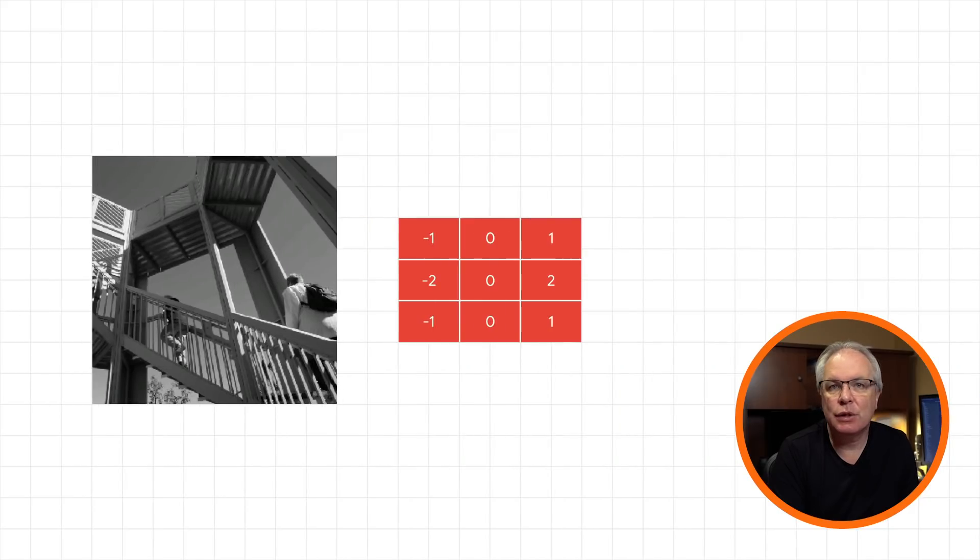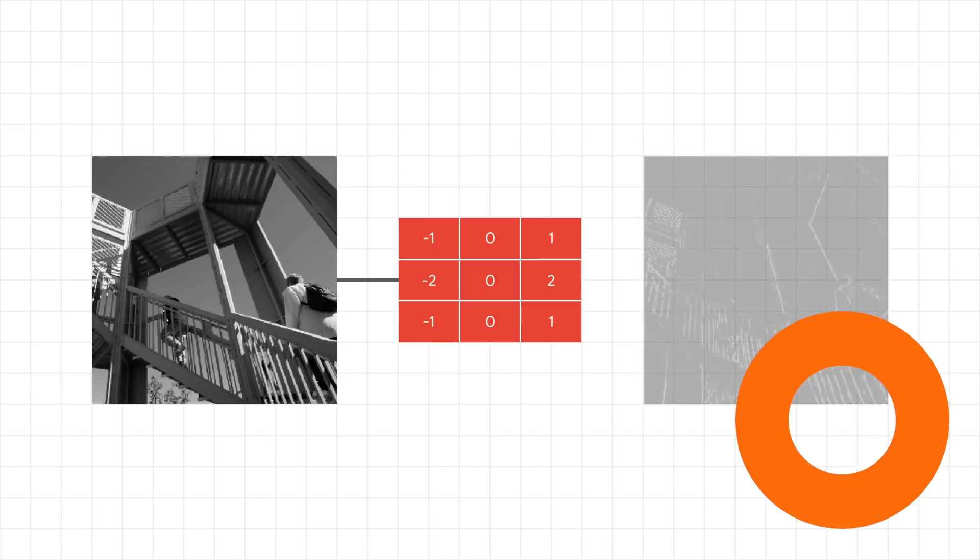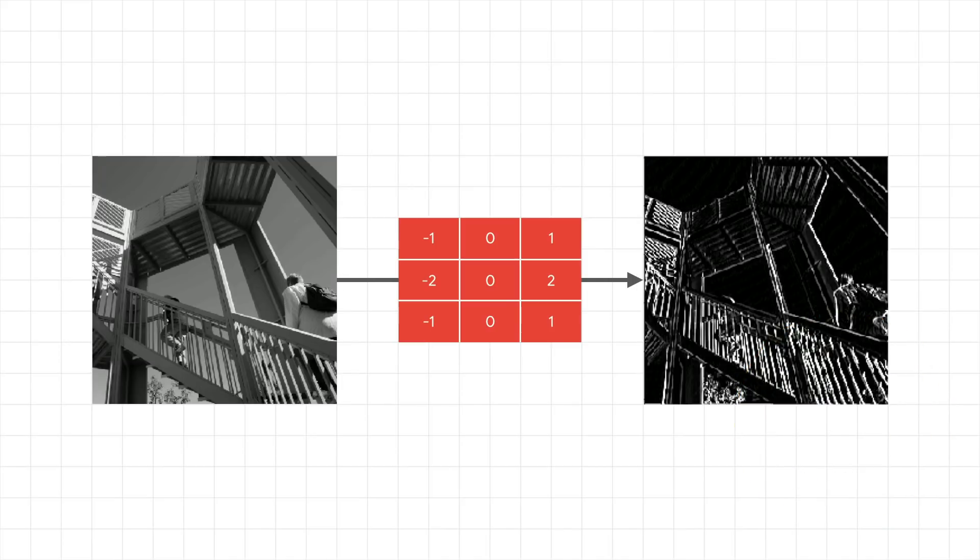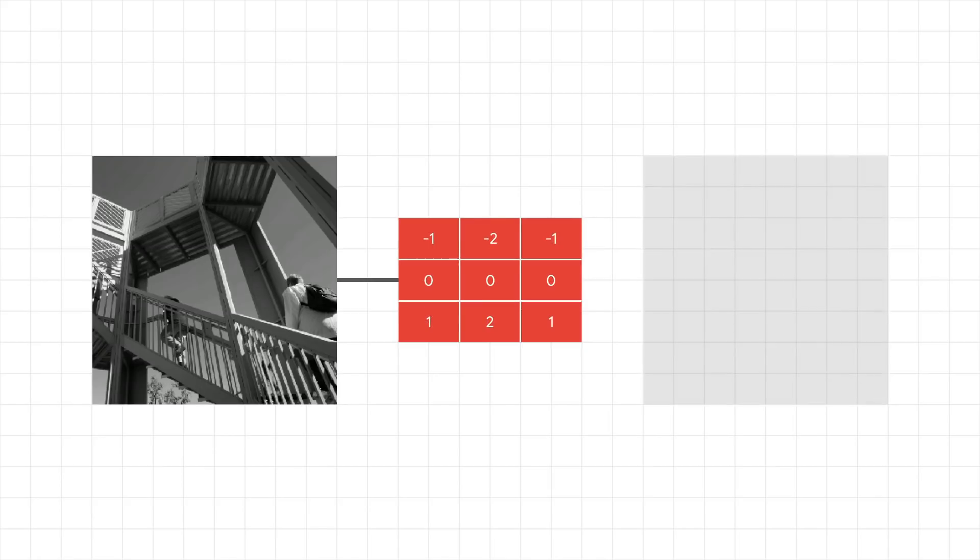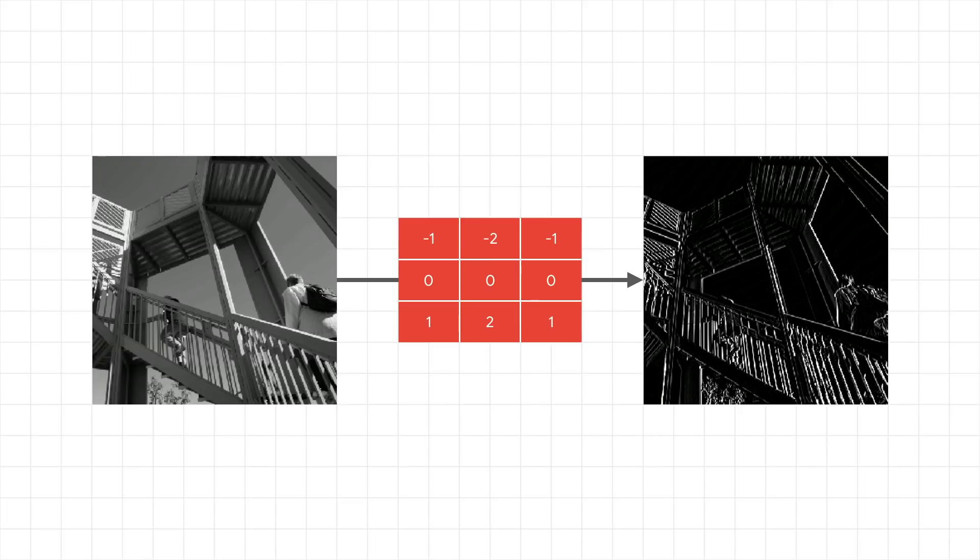So for example, if you look at the picture on the left here, if I apply the filter in the middle to it, I'll get the picture on the right. This filter has led to a huge emphasis on vertical lines. They really pop now. And similarly, this filter leads to an emphasis on horizontal lines.